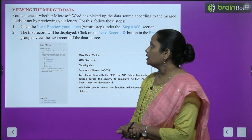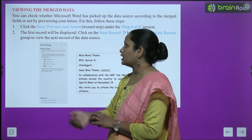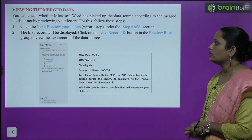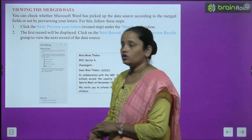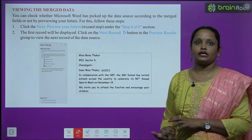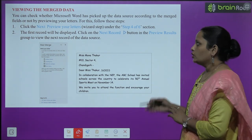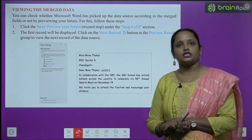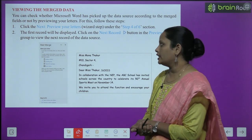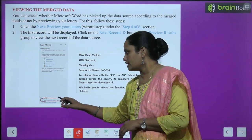Next is viewing the merge data. You can check whether Microsoft Word has picked up the data source according to the merge field or not by previewing your letter. To preview, click Next: Preview Your Letters button, which is in step 4 of 6 in the task pane. The first record will be displayed in front of you.